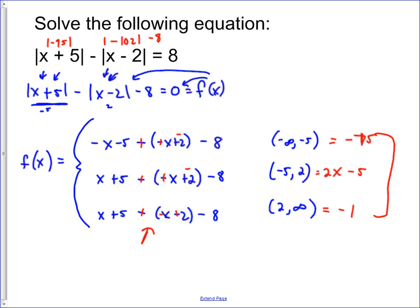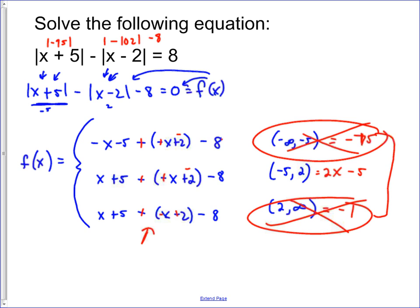So then, to find out if there's a solution, we find the zero of the function. Well, there's no zero in this region. There's no zero in this region. But there is a zero in this region, and that's at x equals 2.5.